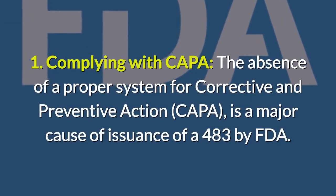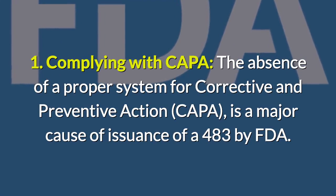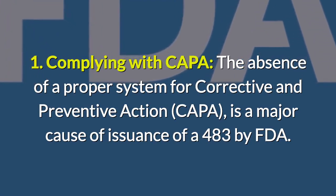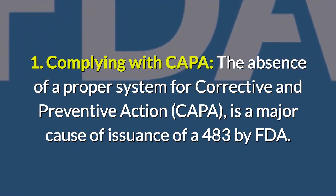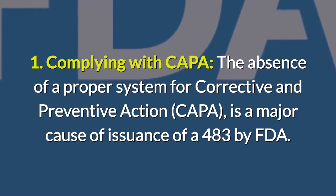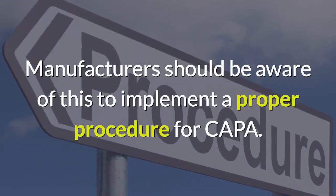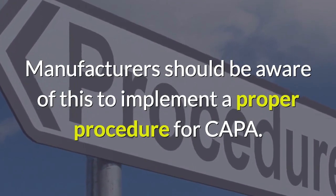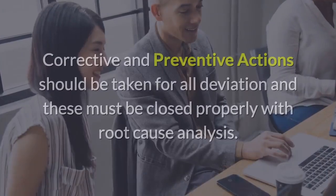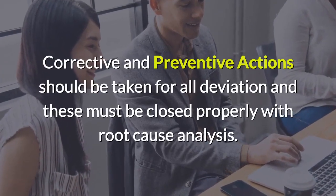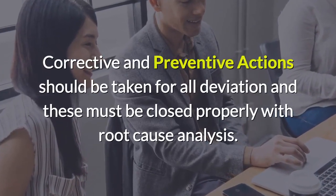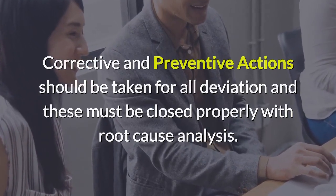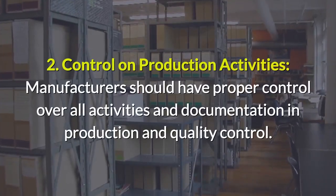1. Complying with CAPA. The absence of a proper system for corrective and preventive action (CAPA) is a major cause of issuance of a 483 by FDA. Manufacturers should be aware of this and implement a proper procedure for CAPA. Corrective and preventive actions should be taken for all deviations, and these must be closed properly with root cause analysis.